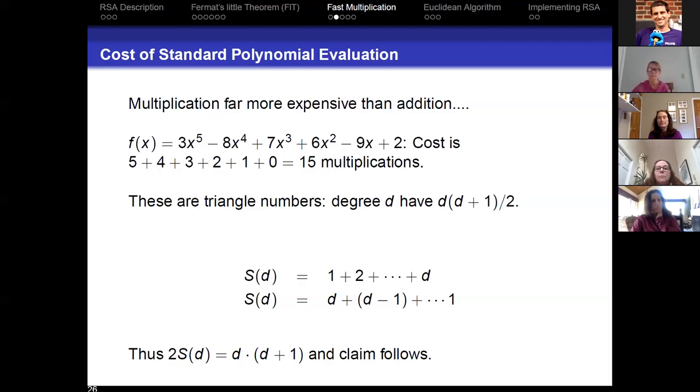What this tells you is that as the degree of the polynomial grows, the cost is growing quadratically. If I have a polynomial of degree 10, it would be 10 times 11 over 2 or 55, which is a bit more than 15. If I had a polynomial of degree 100, it would be 100 times 101 over 2, that'd be about 5,000. So it's growing very rapidly.